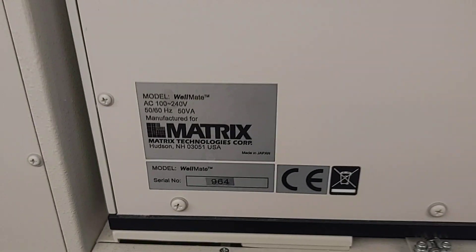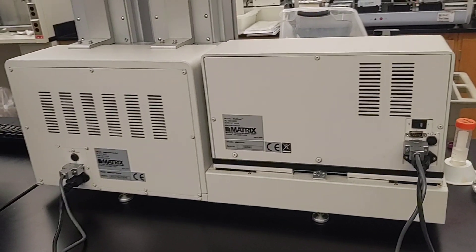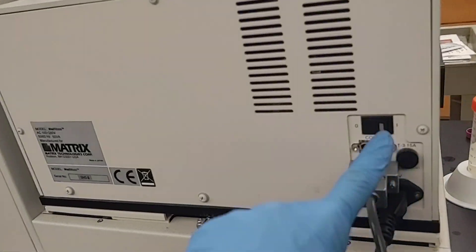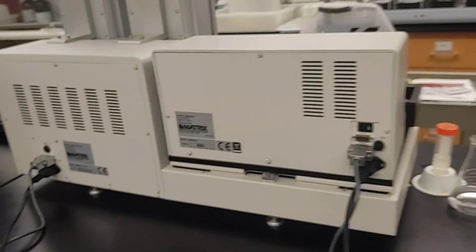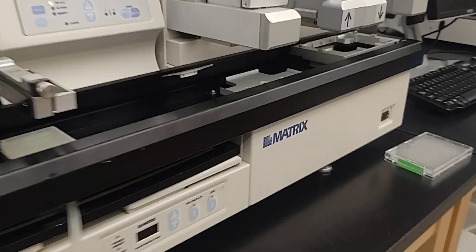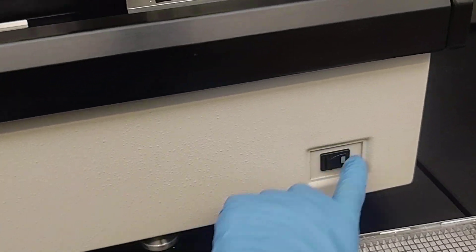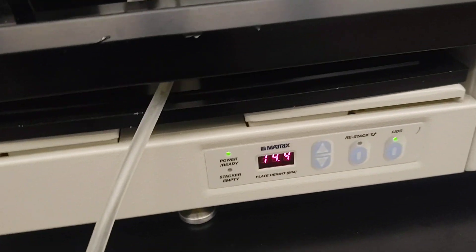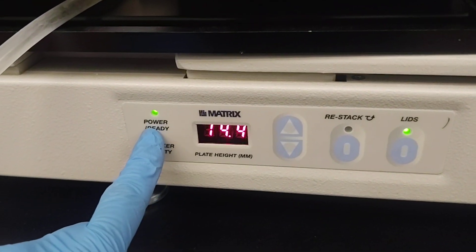We're going to be using the Matrix Wellmate. It's a liquid dispenser and we start by turning it on. This is the back of the instrument. Come around to the front and turn it on over here and you can check at the bottom here that it's on.